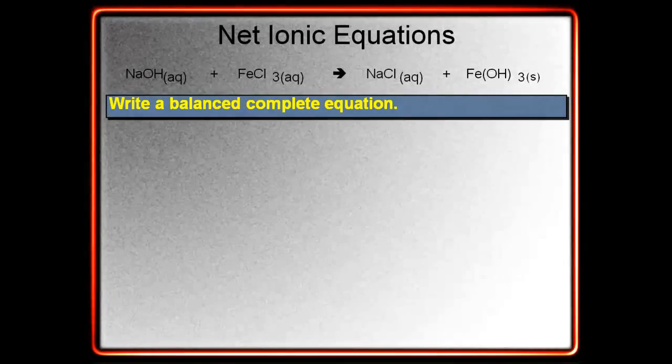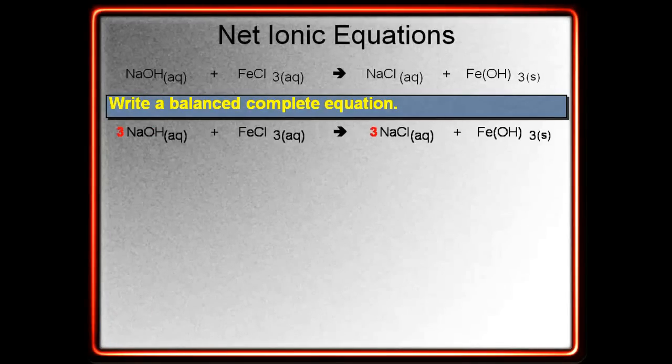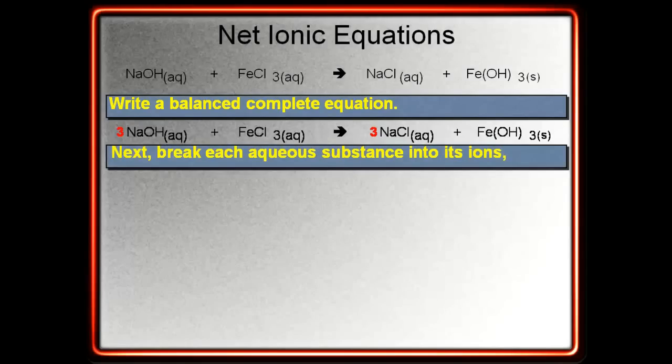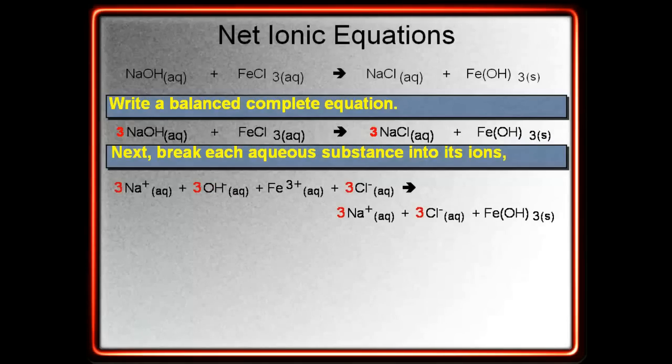Now, we want to balance this equation. So, we go through. We need to add a 3 in front of our sodium hydroxide in the reactants. And we need to add a 3 in front of our sodium chloride in the products. Now, we're balanced. Once we're balanced, we're going to take anything that has an AQ in parentheses after it and break it up into its ions. So, doing that, you'll notice everything breaks up except for that iron-3 hydroxide in the products. That is a solid, so it stays as a compound.